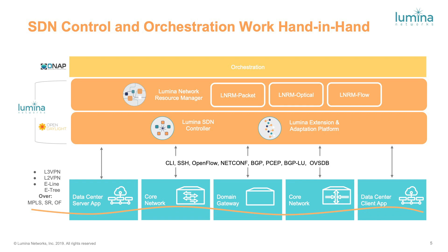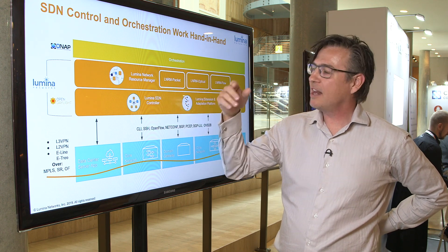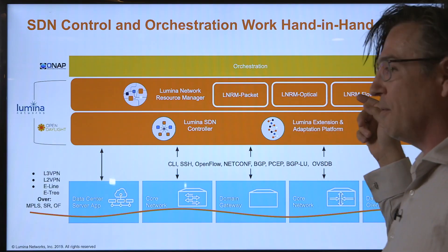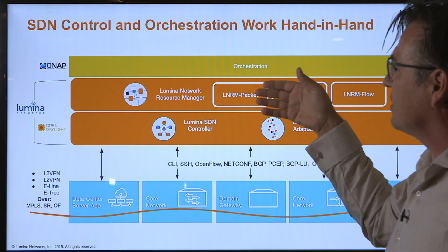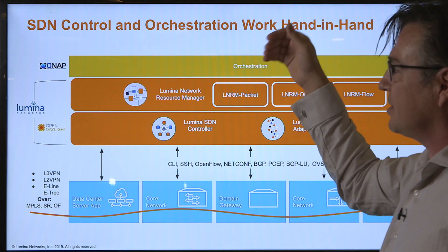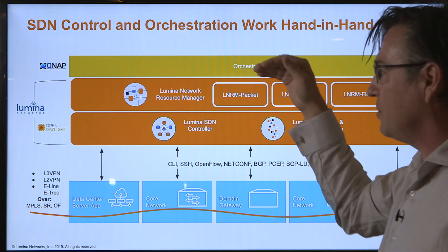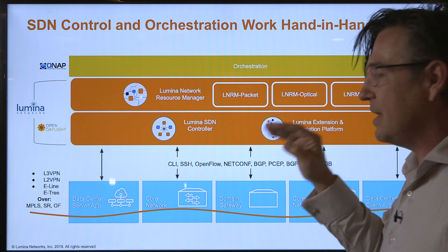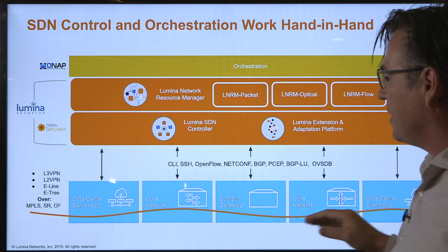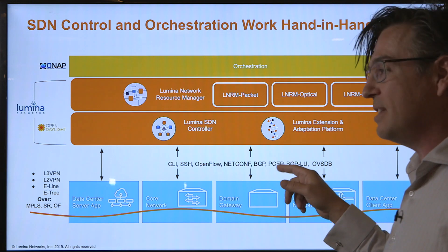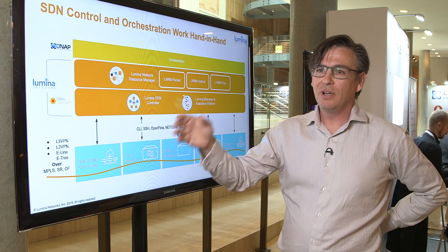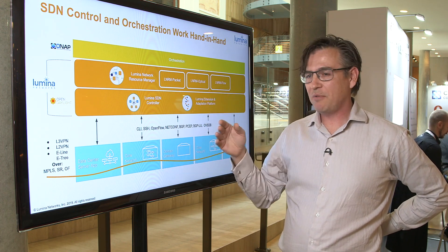This is what we're showing today. We have the LUMINA Networks Resource Manager — an application that sits inside OpenDaylight. It has path computation engines for packet network, optical network, and OpenFlow networks. That sits underneath the orchestration layer. The orchestration layer signals via REST to the NRM, which then runs an application in the SDN controller that sits on top of the network domains. Through protocols like BGP, PCEP, and BGP labeled Unicast, we can configure paths through optical, OpenFlow, and IP packet networks.